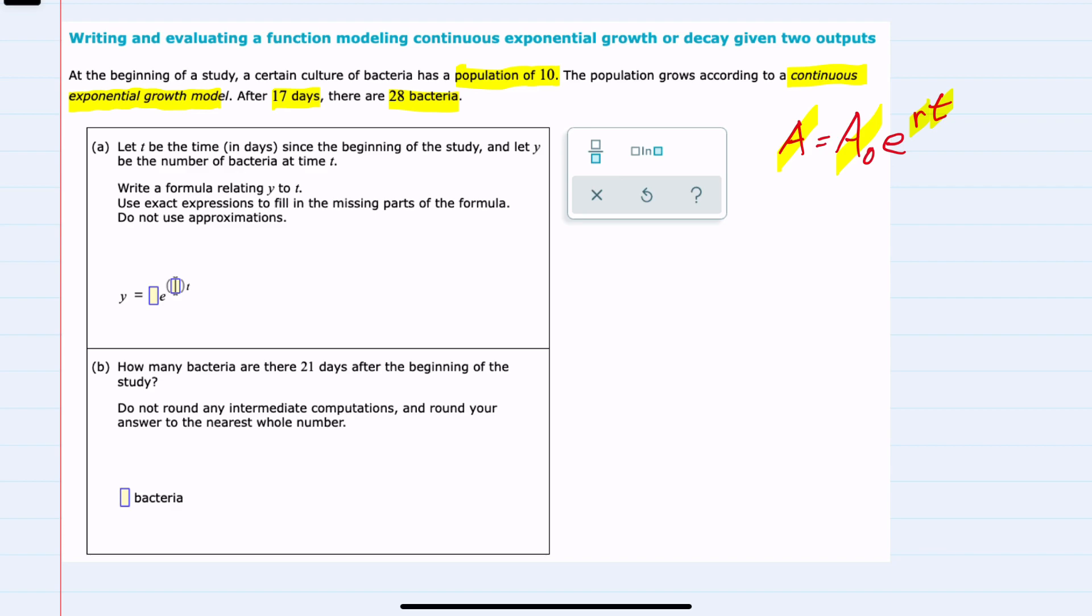We know the initial population is 10, but we don't know the rate. We can use the given information to calculate the rate. After 17 days, there are 28 bacteria from the original 10. Substituting these values, we get 28 equals 10 times e raised to r times 17.